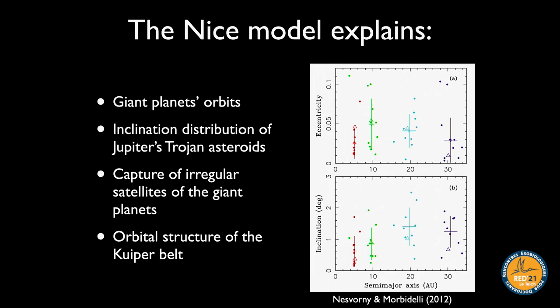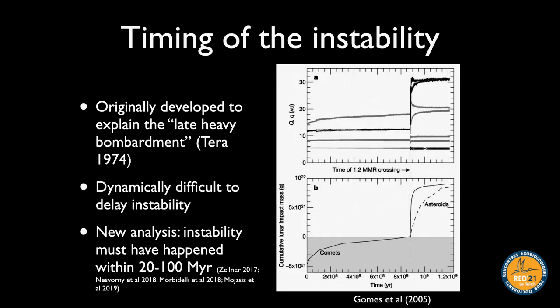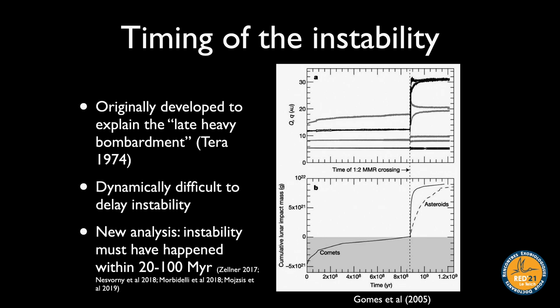The Nice model is favored because it explains many aspects of the solar system simultaneously: the giant planets' orbits, the orbital distributions of small bodies, the inclination of Trojan asteroids, the irregular satellites of giant planets, and the structure of the Kuiper Belt. When developed in 2005, it was partly designed to explain the Late Heavy Bombardment — a proposed spike in lunar cratering — with an initially slow evolution followed by a late instability.